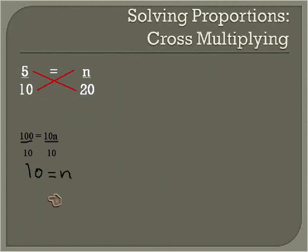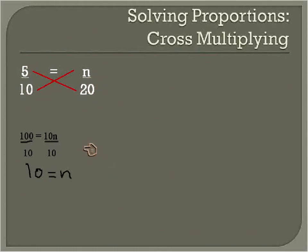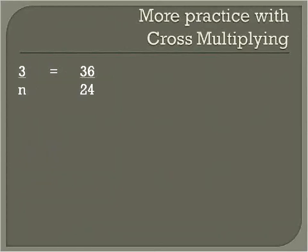So what that's saying is that 10 over 20 is the same as 5 over 10. That's our proportion — we solved for the variable that was there.